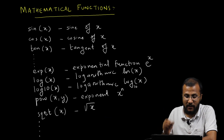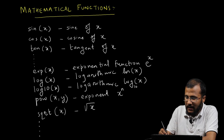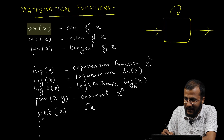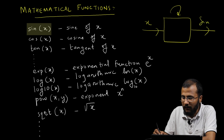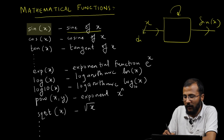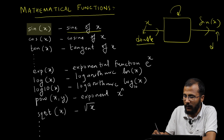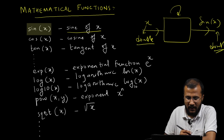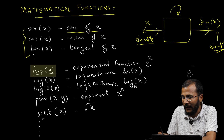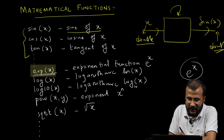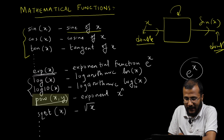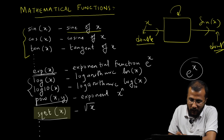Now let's talk in detail about the mathematical header file math.h, which consists of different mathematical functions as displayed here. Each function takes an input, does some processing, and produces an output. For example, the sin(x) function takes x as input and produces sin of x as output — x is a double value and the output is also double. There are different trigonometric functions, an exponential function exp(x) for e to the power x, logarithmic functions, pow for finding a power, and sqrt for square root.